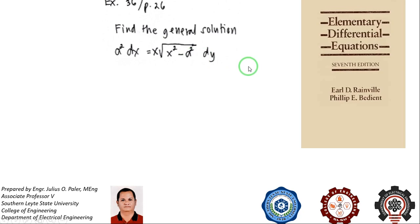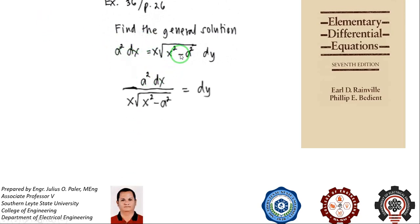This is one of the differential equations wherein separating the variables is not the issue. As you can see in the given equation, it is easy to separate the variables already. The left side of the equation is now a squared dx all over x times the quantity x squared minus a squared, equal to dy. You have already separated the variables x and y.